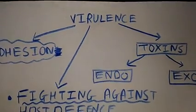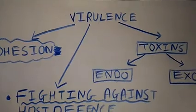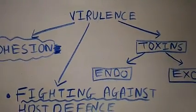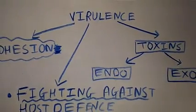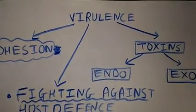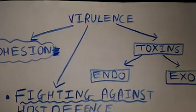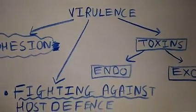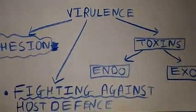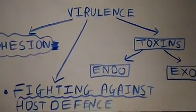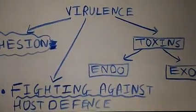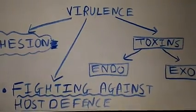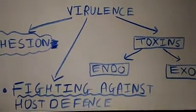Virulence contains adhesion of the bacteria to the host tissue, then toxins which are endo and exo, and the ability of bacteria to fight against the host defense.